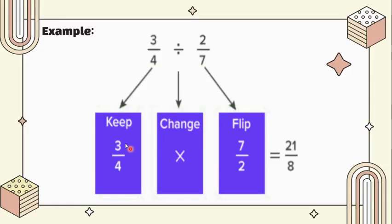We can also make use of this rule: keep the dividend, change the division to multiplication, and then flip it, or get the inverse, that's 7 over 2. Multiplying these two fractions, the product is 21 over 8.